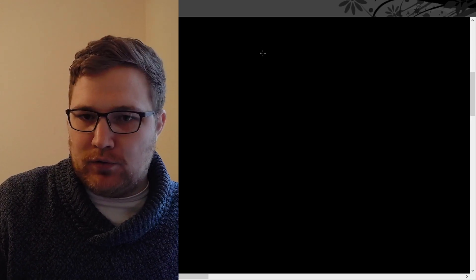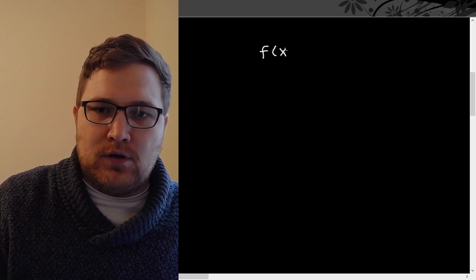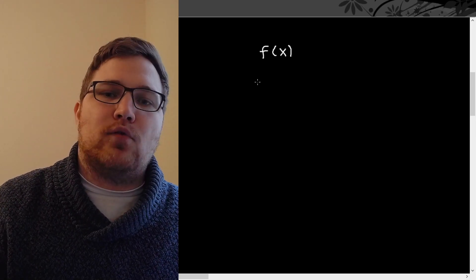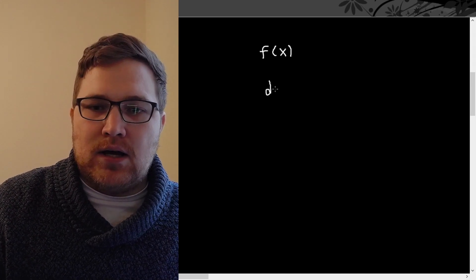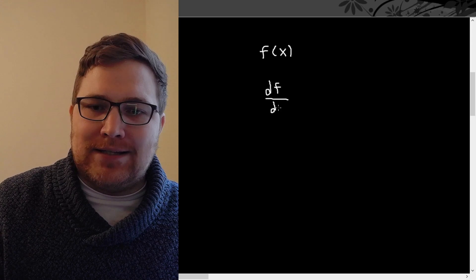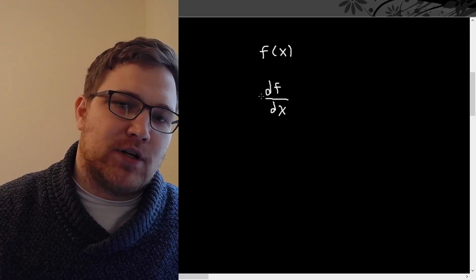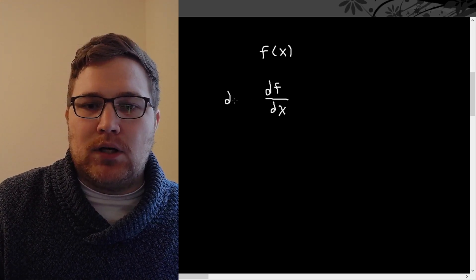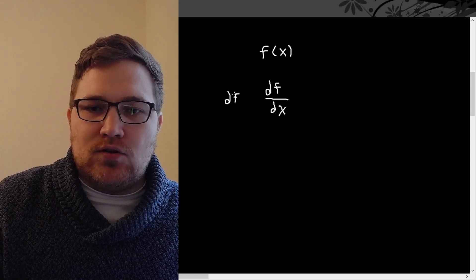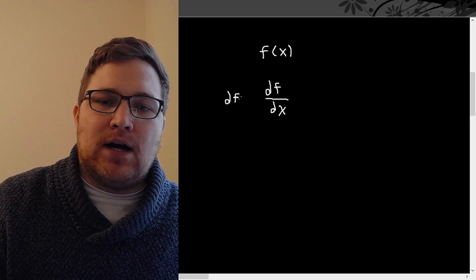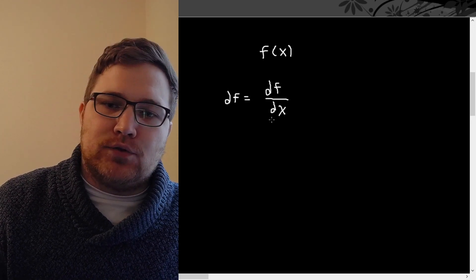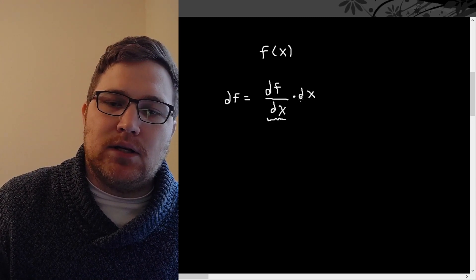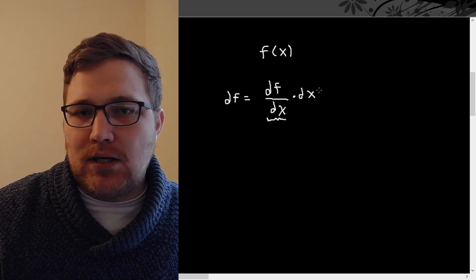If we have a single variable function f of x, we call the instantaneous rate of change for f of x with respect to x df/dx — this is the first derivative of the function f with respect to x. In general, the infinitesimal change in the function f is denoted by df, and it's equal to the instantaneous slope multiplied by the infinitesimal amount of change in the independent variable x.